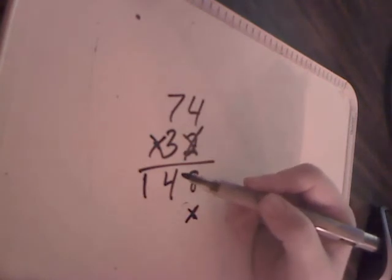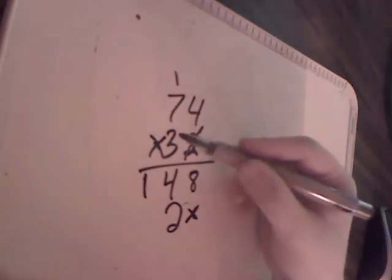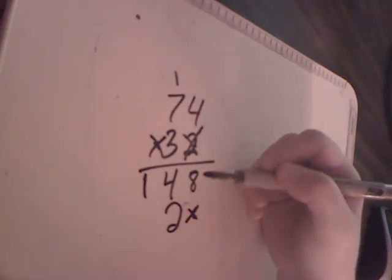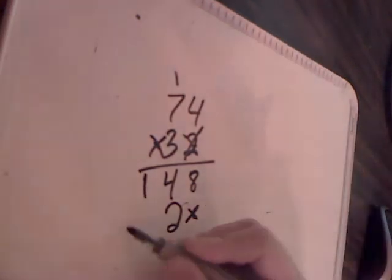Now we're going to move on to this 3. We have 3 times 4. 3 times 4 is 12. Carry that 1 up here. Then we have 3 times 7. 3 times 7 is 21. Plus that 1 right there, which makes 22.